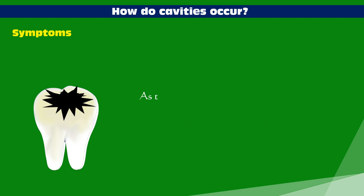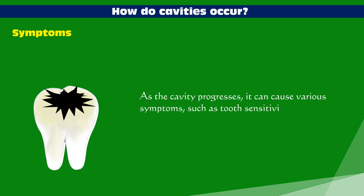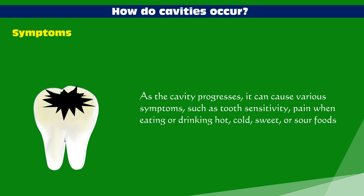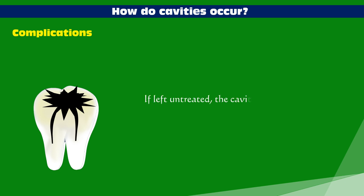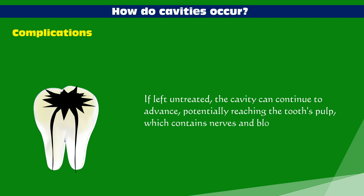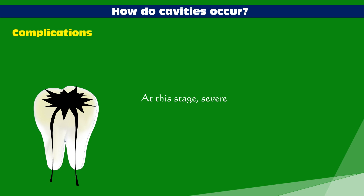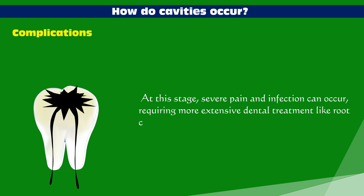As the cavity progresses, it can cause various symptoms such as tooth sensitivity, pain when eating or drinking hot, cold, sweet, or sour foods, and visible holes or dark spots on the tooth surface. If left untreated, the cavity can continue to advance, potentially reaching the tooth's pulp, which contains nerves and blood vessels. At this stage, severe pain and infection can occur, requiring more extensive dental treatment like root canal therapy.